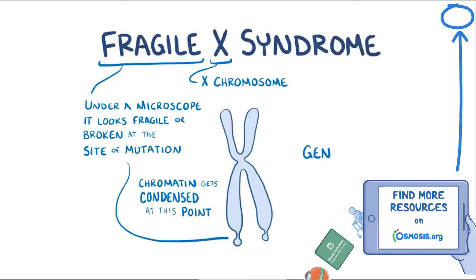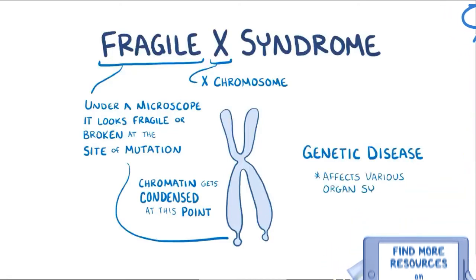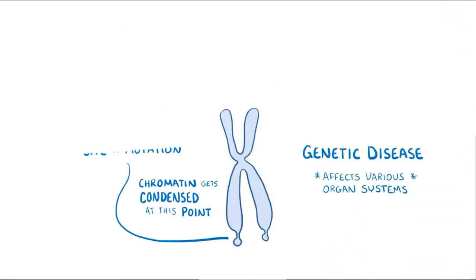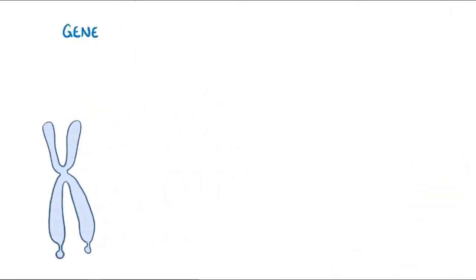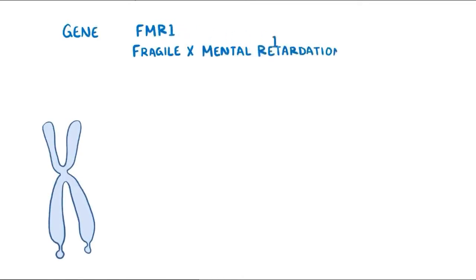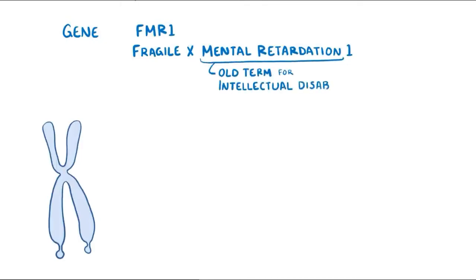Fragile X is a genetic disease that affects various organ systems. The gene for Fragile X is called FMR1, which stands for Fragile X Mental Retardation 1. Mental retardation is an old term for intellectual disability, which is one of the key features of Fragile X syndrome.